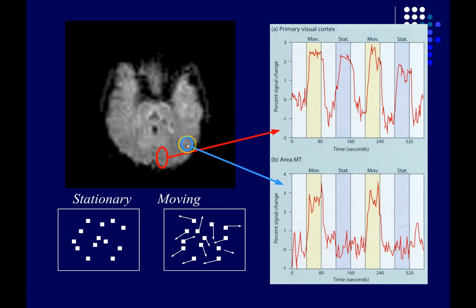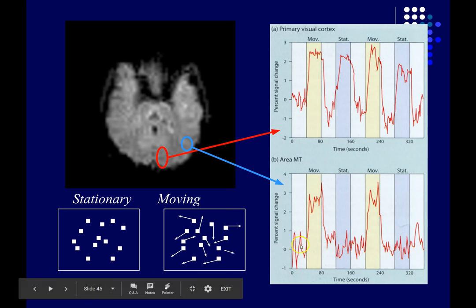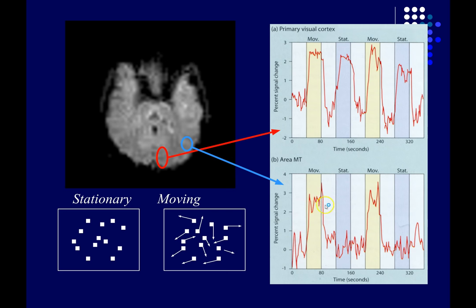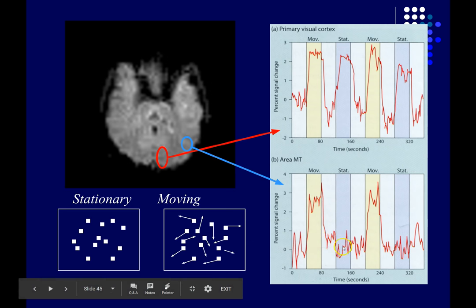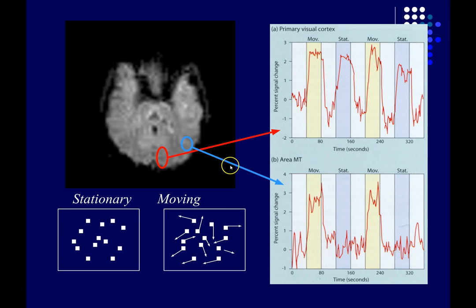Compare that with area MT, right about here. This part of the brain is known to be important for processing movement — analyzing motion in the visual field. When the subject is seeing moving dots, you see a dramatic increase in the signal from that part of the brain. With static dots, there's almost no activity: the neurons here just aren't responding to stationary dots. In animals, we can place a microelectrode into this part of the brain and show that individual neurons represent specific directions of movement from a particular part of the visual field.